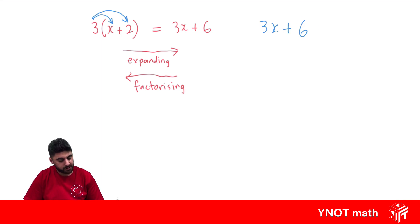What is the highest common factor of both of these terms? Well, the highest common factor is actually 3, because 3 goes into 3x and 3 goes into 6. So once we work out the highest common factor, that's what goes outside the bracket.